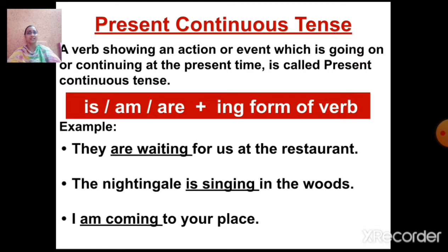In the next sentence: 'The nightingale is singing in the woods.' Here the subject is 'the nightingale', that is a singular subject. So we write 'is' plus ING form of verb, that is 'singing'. Then the next sentence: 'I am coming to your place.' In this case, the subject is 'I'. So we write 'am' plus ING form of verb, that is 'coming'.